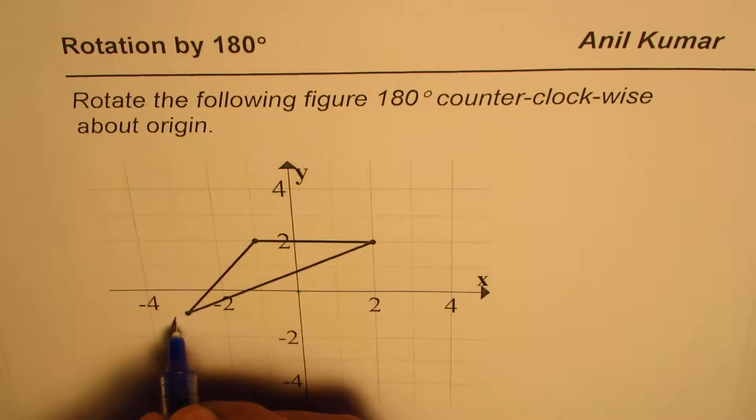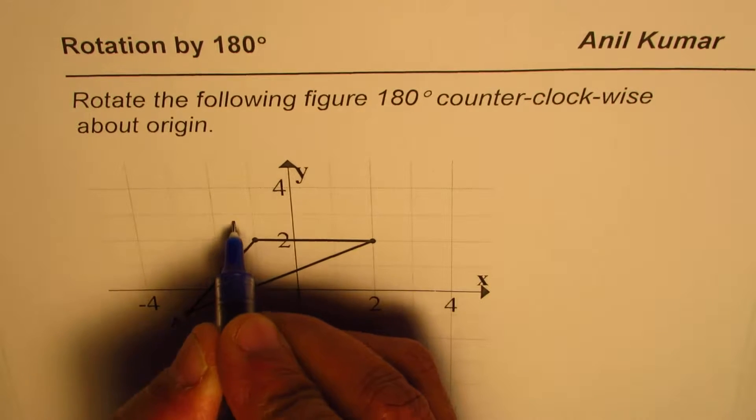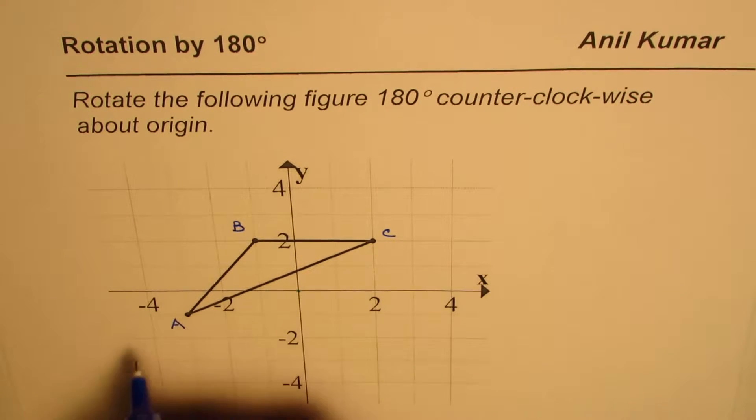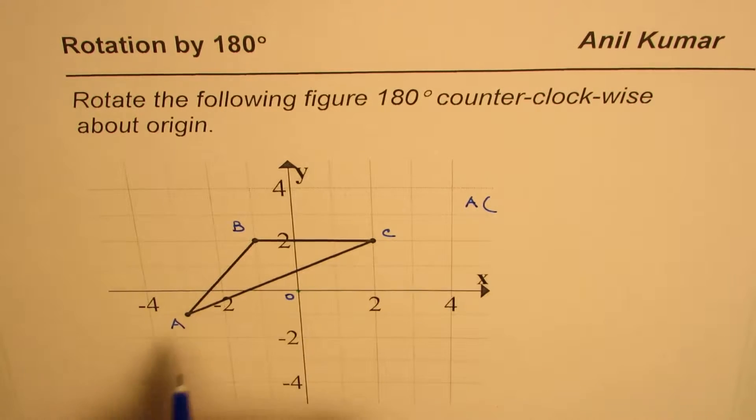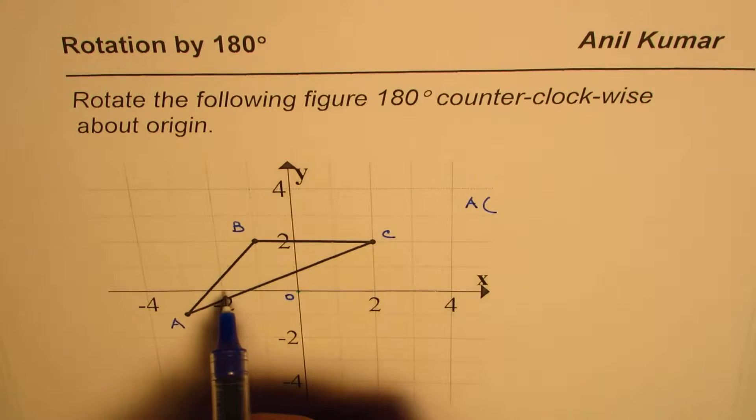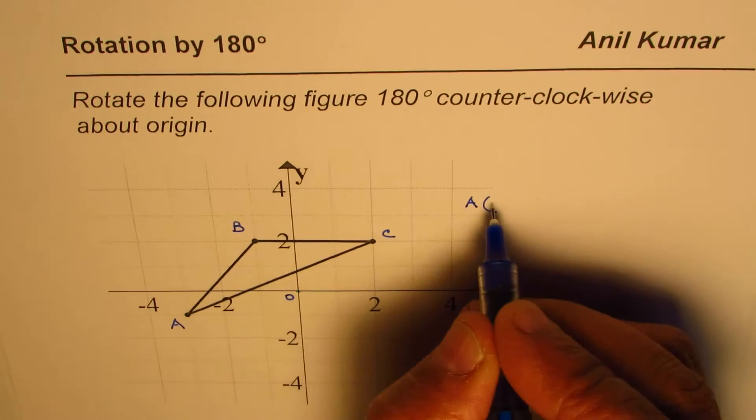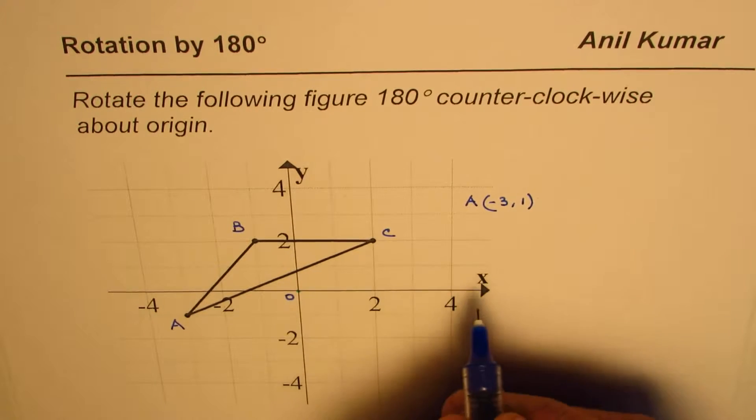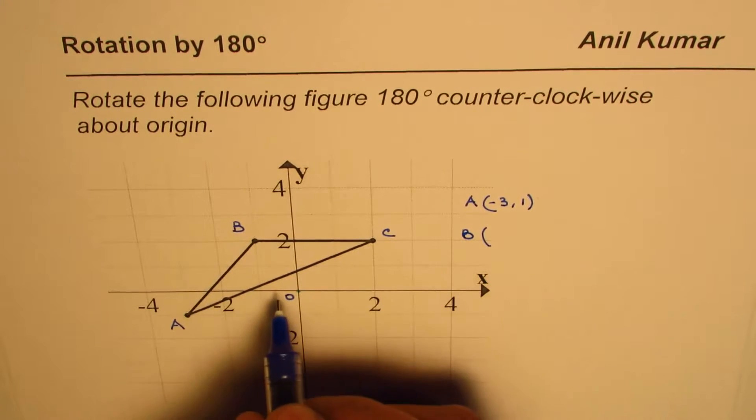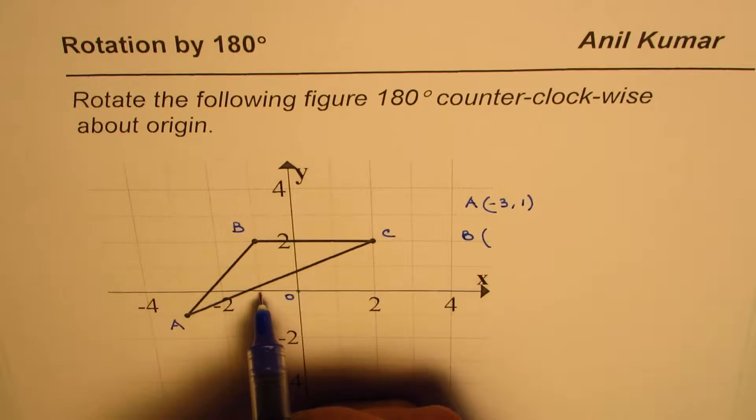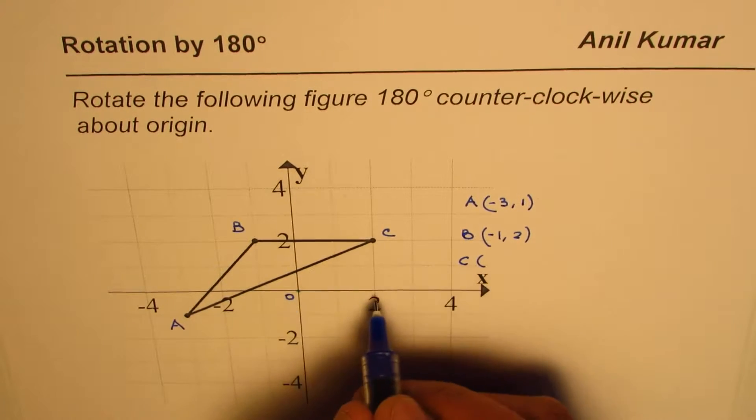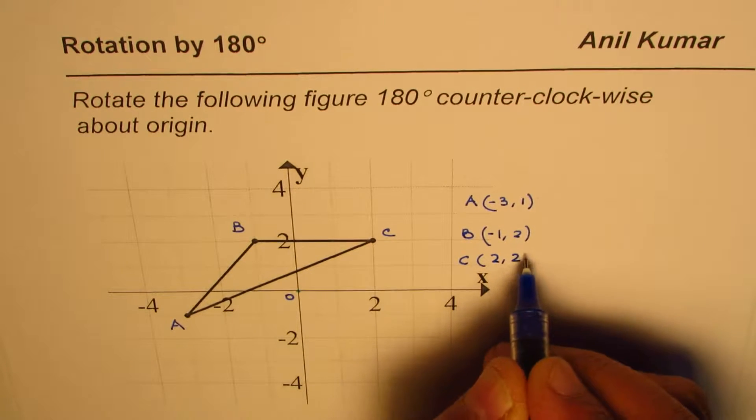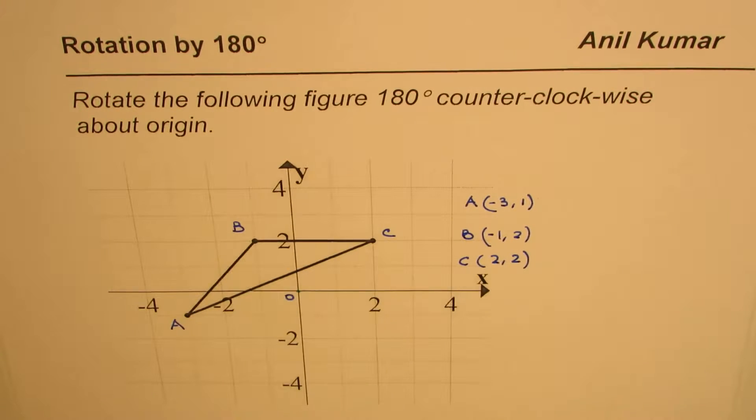The steps to do are that you need to label these points. Let's start with points as A, B, C and write down their coordinates. Point A with reference to origin O is minus three, minus one. Point B is minus one, two, and point C is at the location two, two.